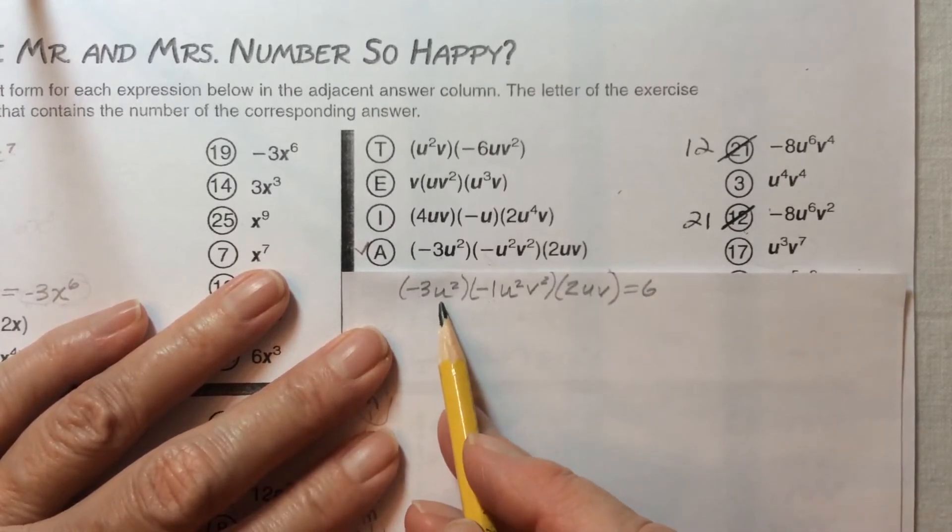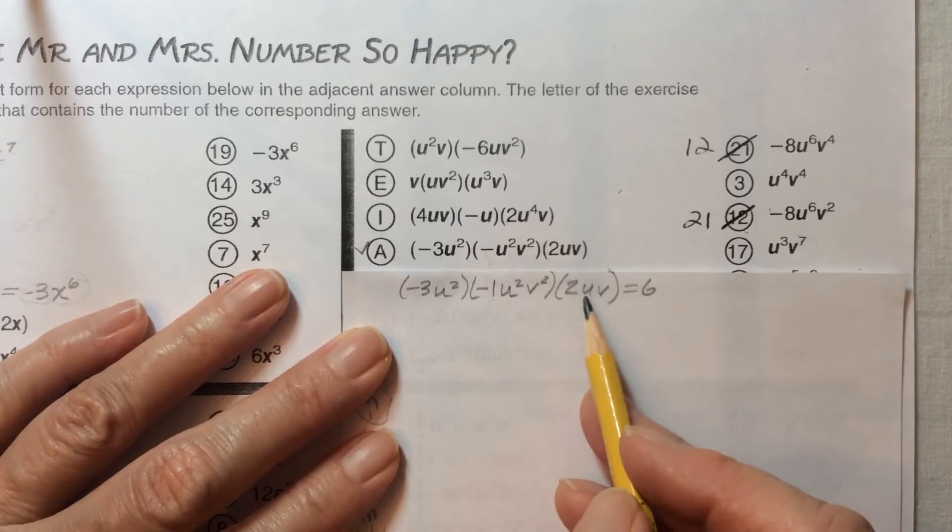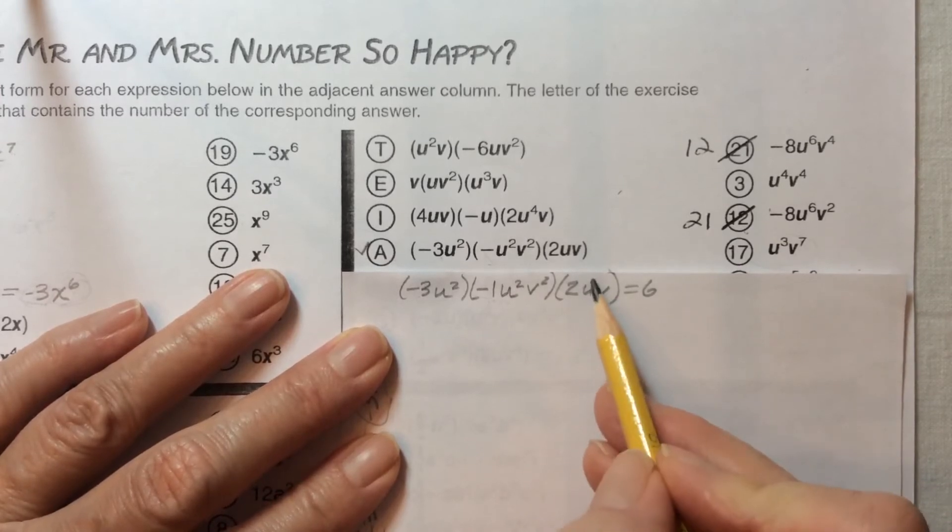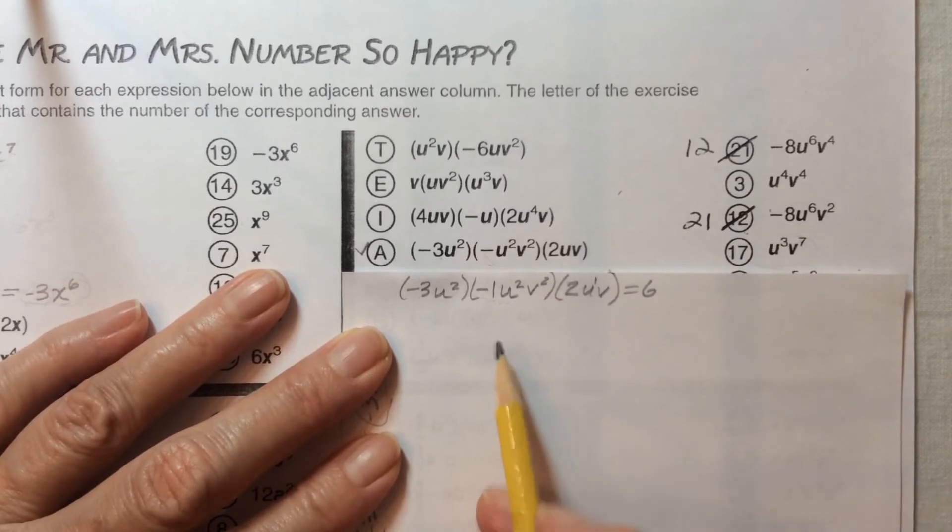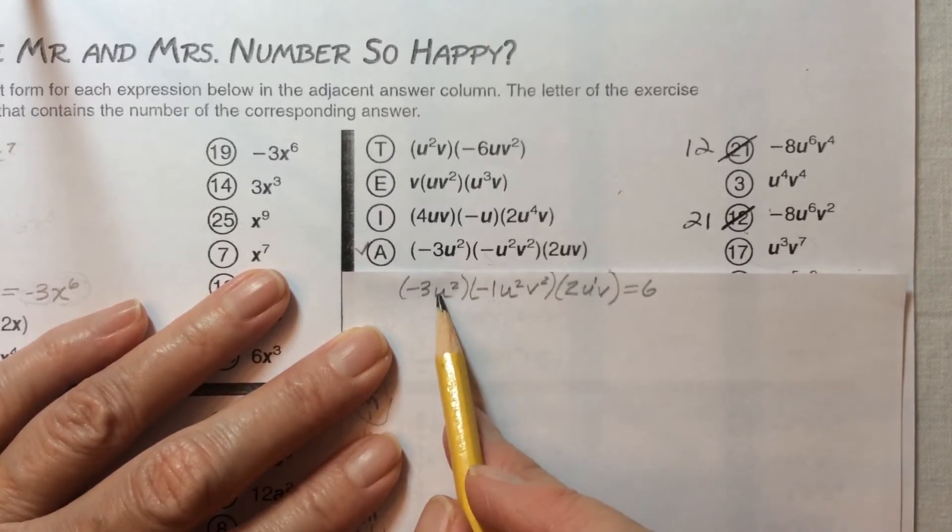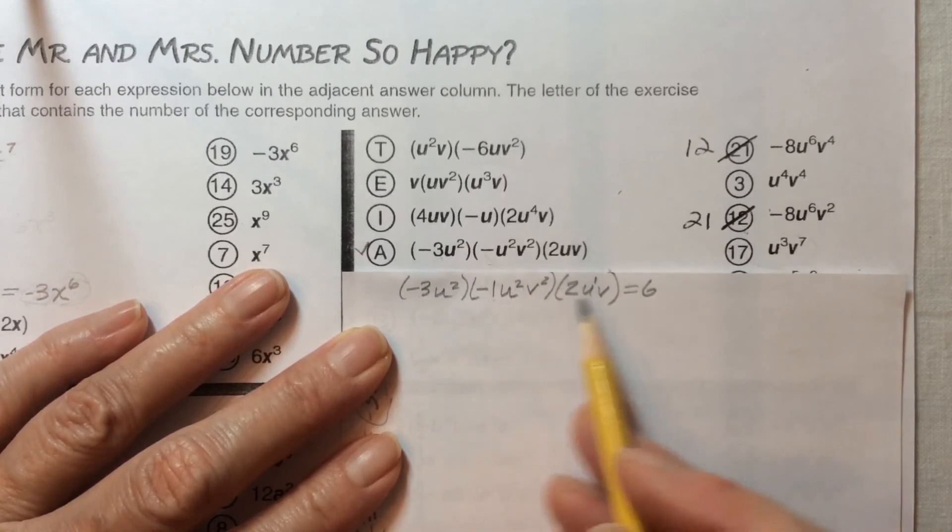Then let's look at the variables. We have u to the second power, u to the second power, and just plain u. When we've got one u, that's u to the first power. If we add up those exponents, 2 plus 2 is 4, plus one more is 5, so that's u to the fifth power.